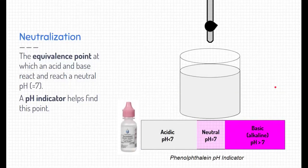This next slide is really important to pay attention to, because it's going to bring it all together. Neutralization is when we take an acid and a base and react them together to try to neutralize each other. We call that neutralization point the equivalence point, and we can use a pH indicator to help us find this point.